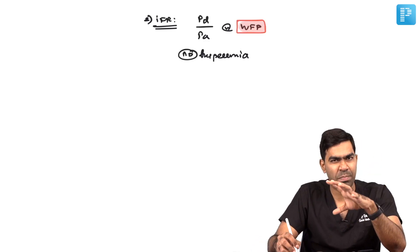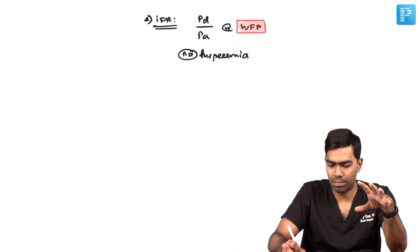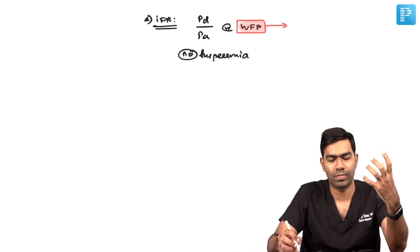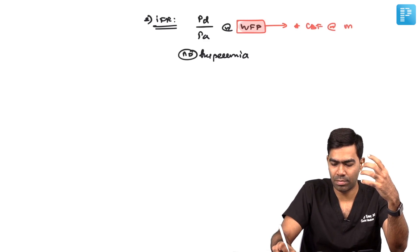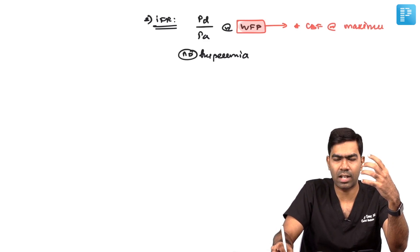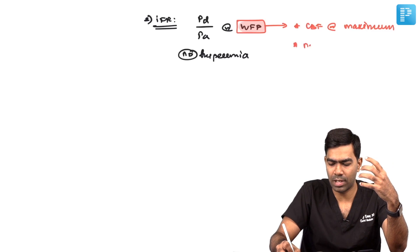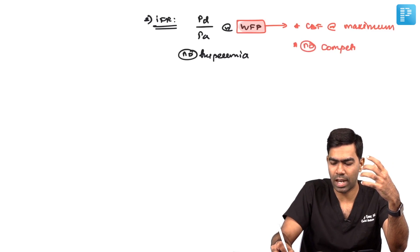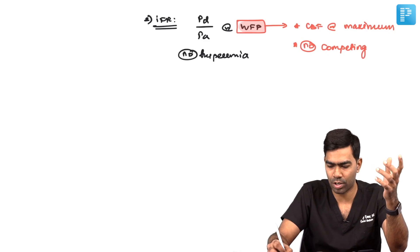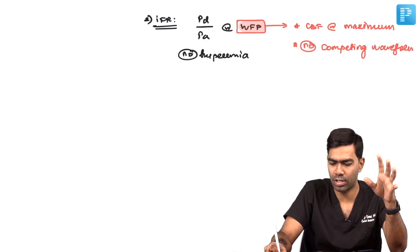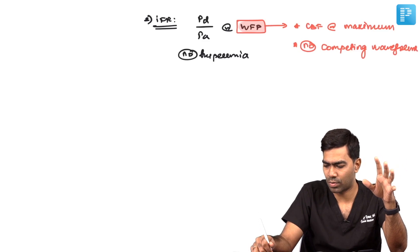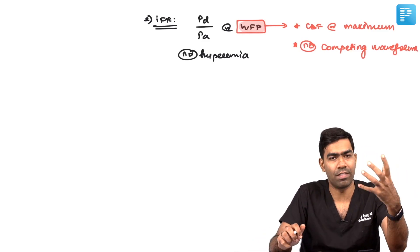Wave free period is a very specific area in the diastolic pulse wave where coronary blood flow is at its maximum in the entire cardiac cycle. At the same time, there are absolutely no competing waves from any other systemic vessels. It's all about the coronary blood flow and coronary circulation only.